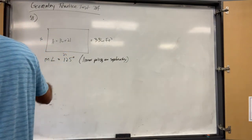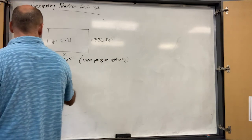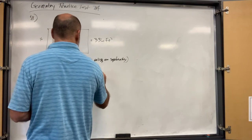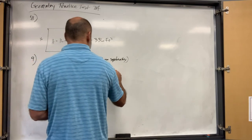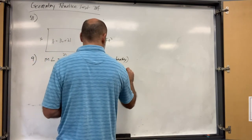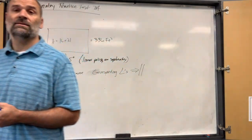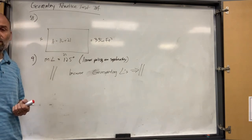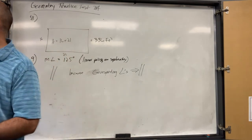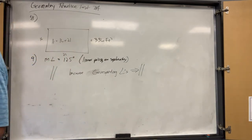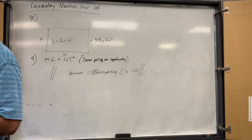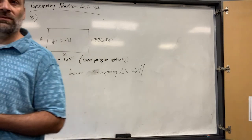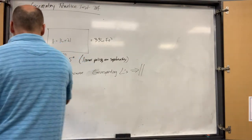You need to recognize alternate exterior, alternate interior, and corresponding angles — those are the big ones. Since angle 3 is 125 and corresponds to the given 125, corresponding angles implies parallelism. You could also find angle 1 the same way using the linear pair, and then use alternate exterior angles.